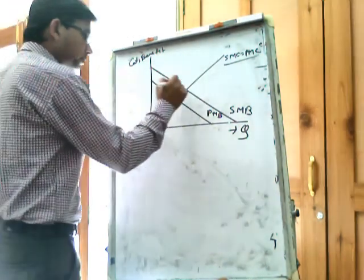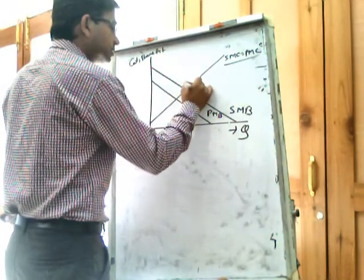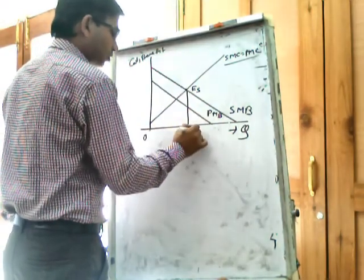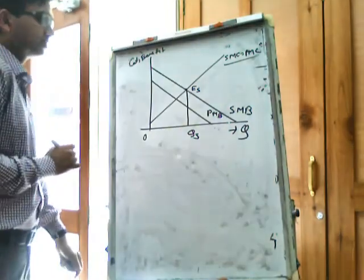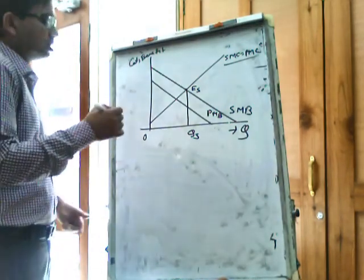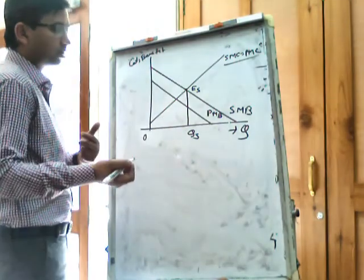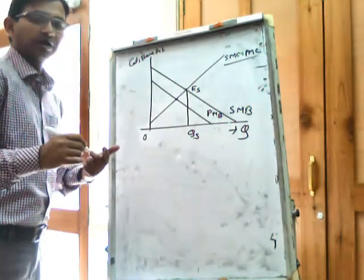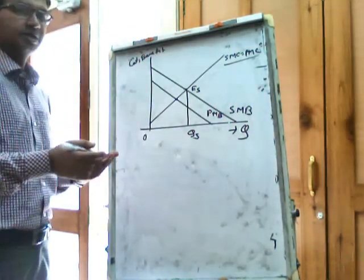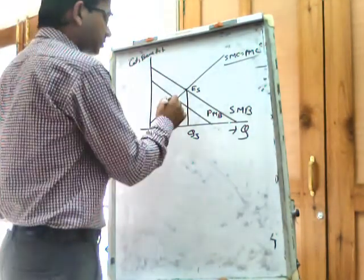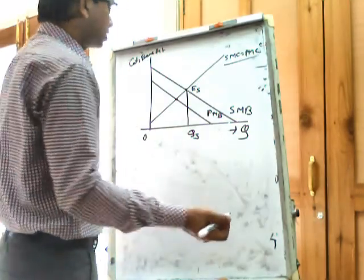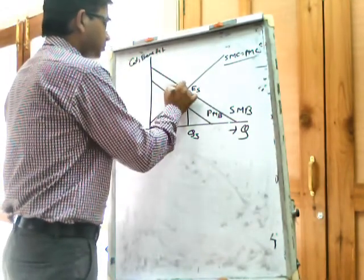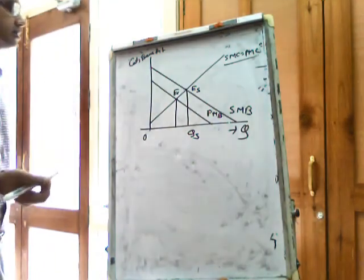The socially optimum equilibrium point is ES and optimum level of output is OQS. But the individual person will go by their own equilibrium achieved when private marginal benefit equals private marginal cost. So EC is the equilibrium point at OQC. We call it a sub-optimal equilibrium.